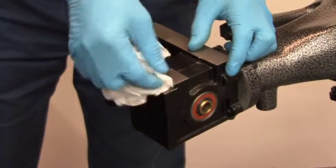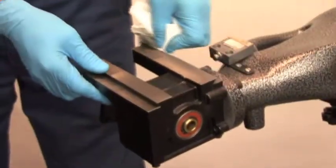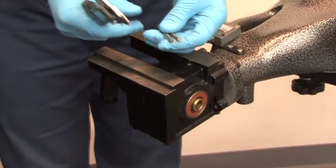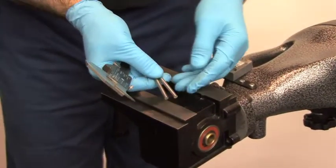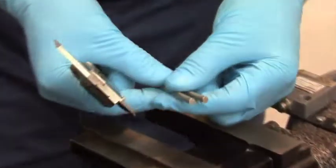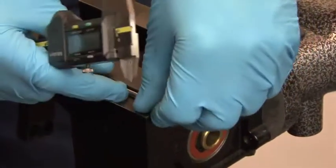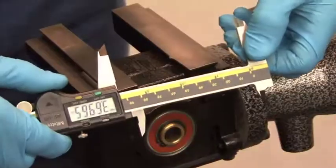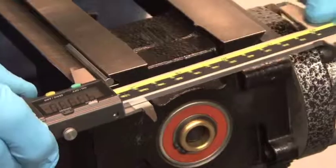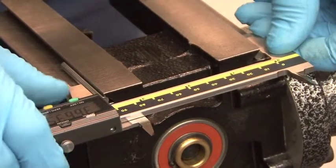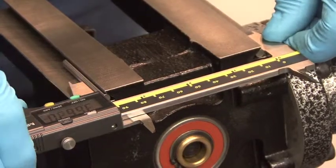Clean the rails of the gearbox. Using two 5mm pins, measure the distance between the rails on the gearbox. Place them in the dovetail of the rails. Using a digital caliper, position the measuring arms against the 5mm pins. Take your reading.